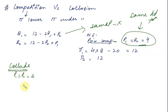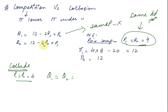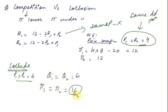When they collude, price being the same is necessary — that is how we define collusion. So q1 is equal to q2 again because we have the same demand curve. q1 equals q2 equals 6. The profit of the first firm, which equals the profit of the second firm, is 6 times 6 equals 36, minus 20, which is 16. So when they collude, profit is higher compared to when they are competing with each other.